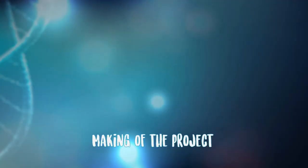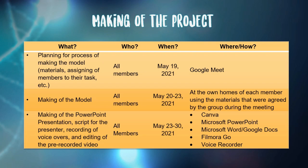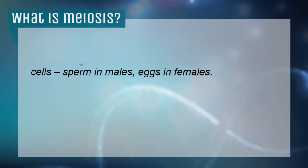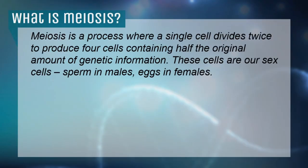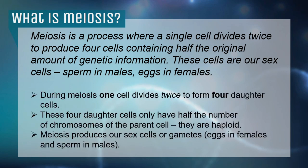Here we have the plan that we followed to complete the activity within the time limit. Now, before our presentation — what is meiosis? Meiosis is a process where a single parent cell divides twice to produce four daughter cells containing half the original amount of genetic information. Since they have half the number of chromosomes that the parent cell had, they are called haploids.